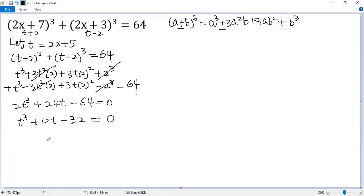To factor the left side, we play a trick. We break 32 as 8 plus 24. So we get t³ - 8 + 12t - 24 = 0.